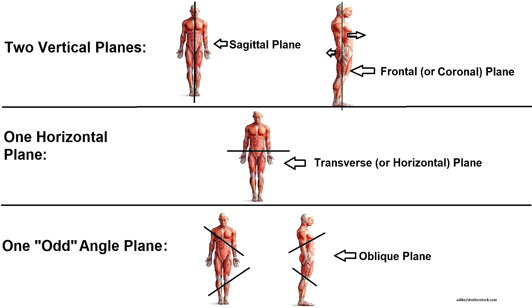Two of these planes are vertical, running from top to bottom — these are the sagittal and frontal planes. One plane is horizontal, which is the transverse plane, and the oblique planes are at odd angles. It can be any type of plane other than a vertical or horizontal plane.